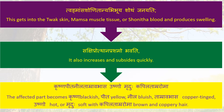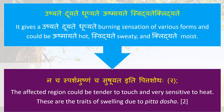The affected part becomes Krishna (blackish), Peeta (yellow), Neela (bluish), Tamra (copper-tinted), and is Ushna (hot) and Mridhu (soft), with Kapila Tamra Roma (brown and coppery hair). It gives burning sensations of various forms — Ushmayate (hot), Svedate (sweaty), Klidhyate (moist). The affected region could be tender to touch and very sensitive to heat. These are the traits of swelling due to Pitta Dosha.